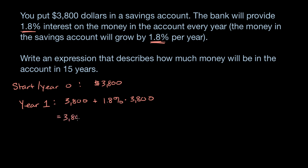We could also write this as a decimal. This is equal to 3,800 plus 3,800 times 0.018. 1.8% is the same thing as 18 thousandths, or 1.8 hundredths.